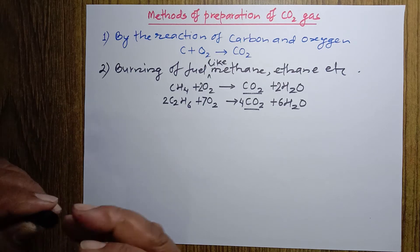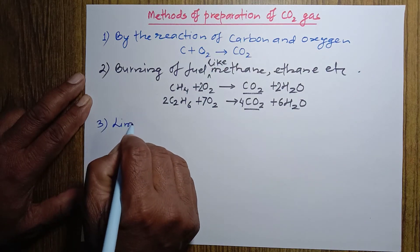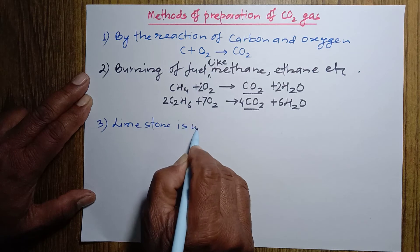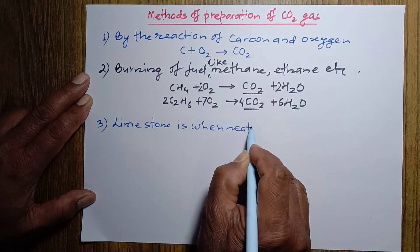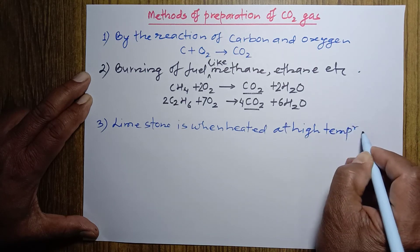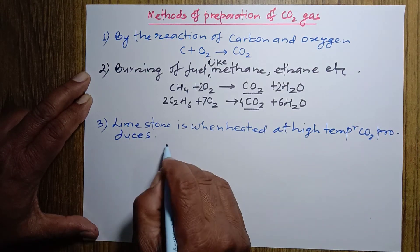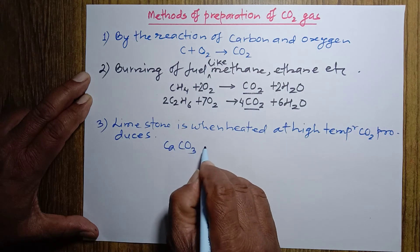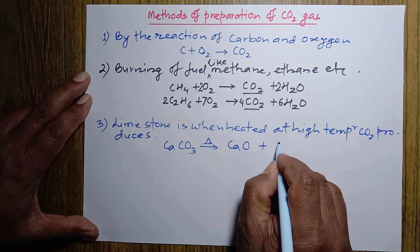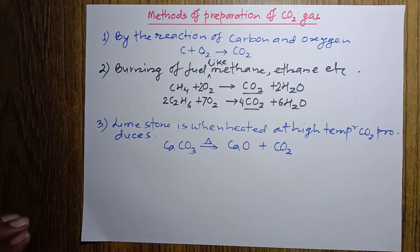Now let's talk about another method of preparation of carbon dioxide gas — number three: when limestone is heated. When limestone is heated at high temperature, CO₂ gas produces. Limestone's chemical name is calcium carbonate, and when this calcium carbonate is heated at high temperature, it decomposes to form calcium oxide and carbon dioxide. This reaction is already balanced, so we don't need to place any coefficients.